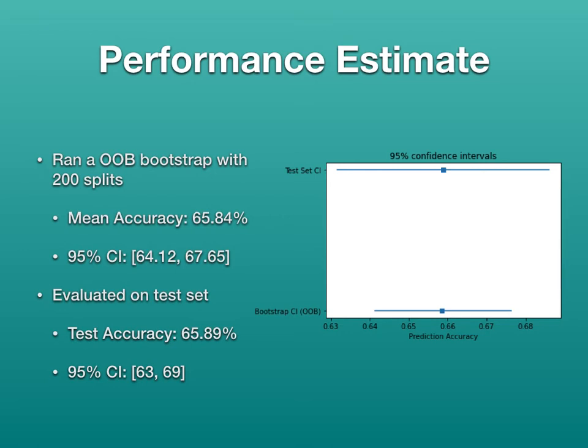For the performance estimate of this model, I ran an out-of-bag bootstrap with 200 splits. I got a mean accuracy of 65.84% and a 95% confidence interval of 64.12% to 67.65%. I then evaluated it on the test set, which was the 2017 to 2018 season, and got a test accuracy of 65.89% with a 95% confidence interval of 63% to 69%.